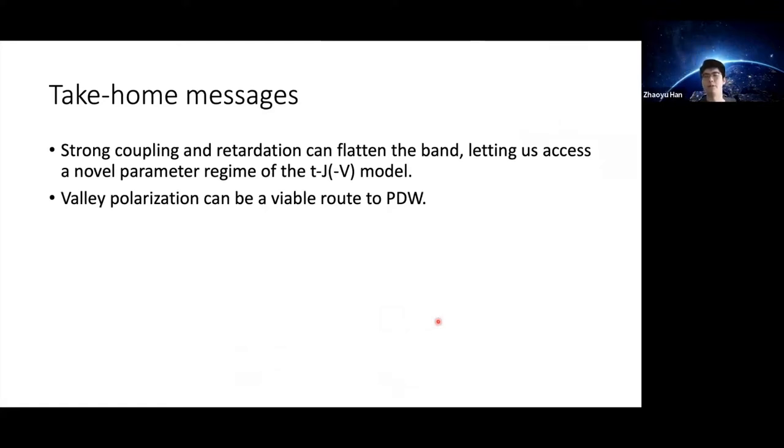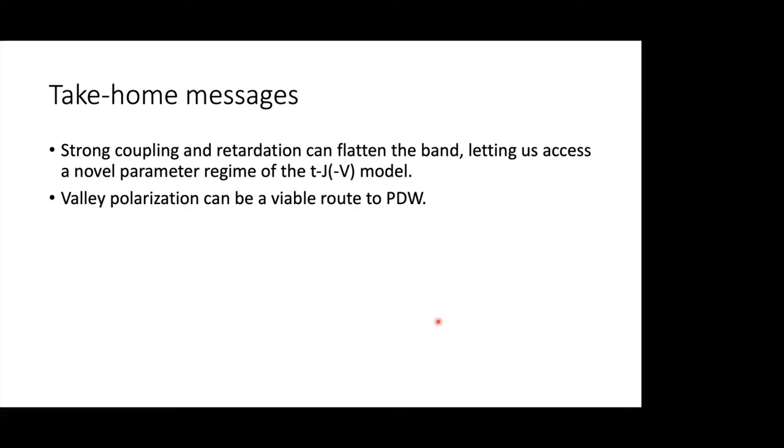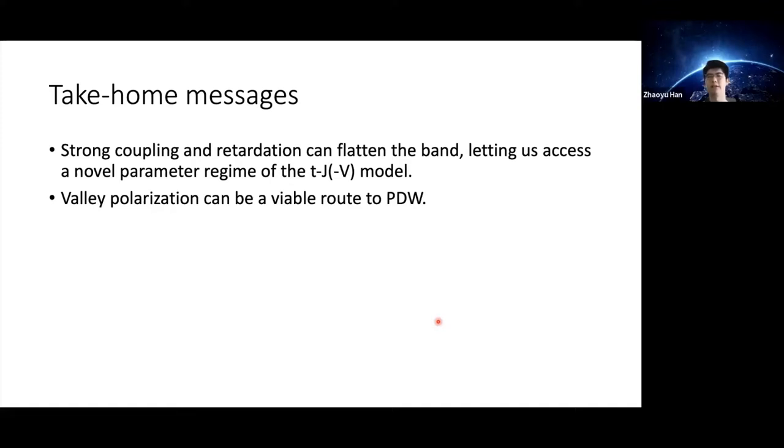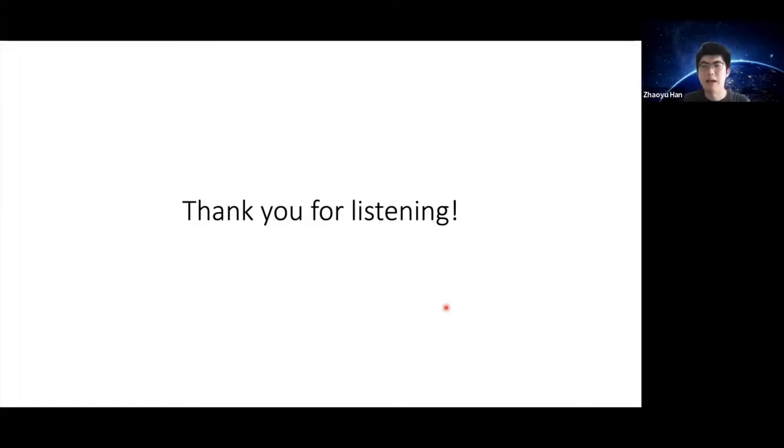This comes to the end of the talk today. I would like to convey two most important take-home messages. First, we find that strong coupling plus retardation can effectively flatten the band, which lets us access a novel parameter regime of the well-studied t-J-V model. Second, we find that valley polarization can be a viable route to a pair density wave. Since valley polarization is easier to happen in a flattened band, probably this is relevant to some Moiré material experiments. Thank you for listening. I'm happy to take any questions now.